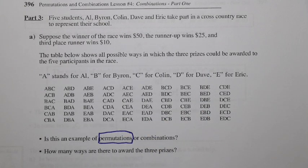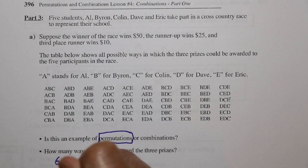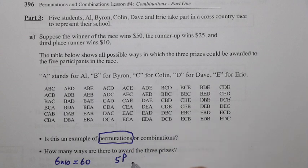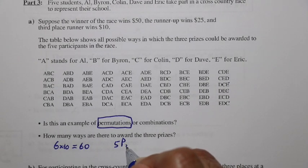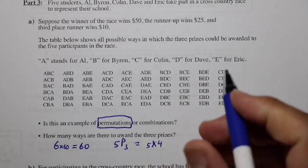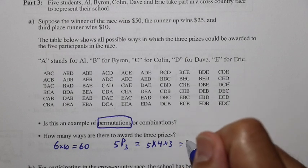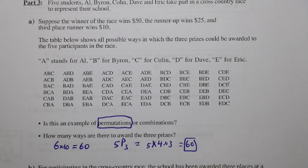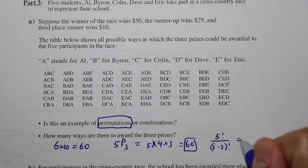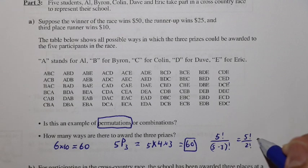How many ways are there to award the three prizes? We can count: there are 6 rows and 10 columns, so 6 times 10 is 60. We can also think of it as selecting and arranging 3 out of 5 people: 5 times 4 times 3 equals 60. Using the formula, that's 5 factorial over (5 minus 3) factorial, which is 5 factorial over 2 factorial — 120 divided by 2, which is also 60.